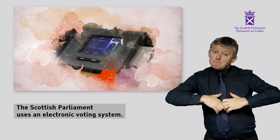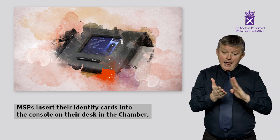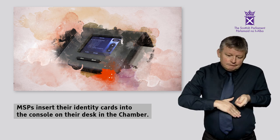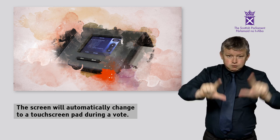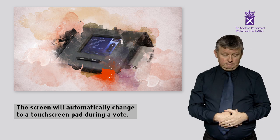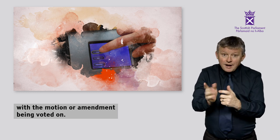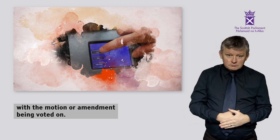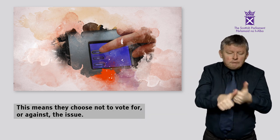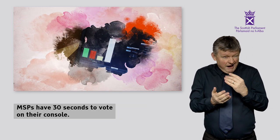The Scottish Parliament uses an electronic voting system. MSPs insert their identity cards into the console on their desk in the Chamber. The screen will automatically change to a touch screen pad during a vote. MSPs can choose to agree or disagree with the motion or amendment being voted on. They can also abstain from a vote, meaning they choose not to vote for or against the issue.